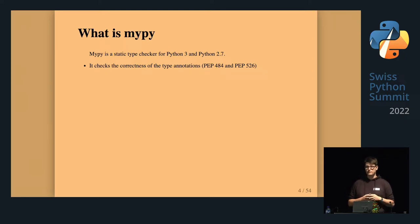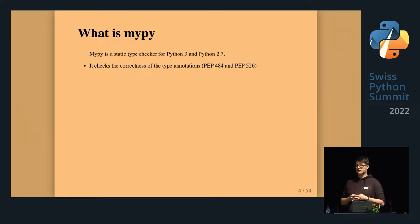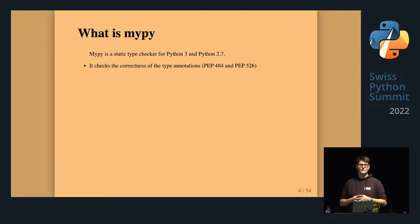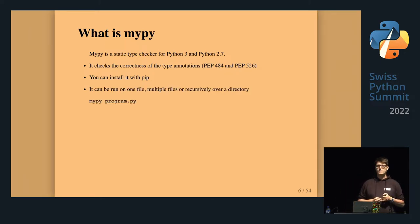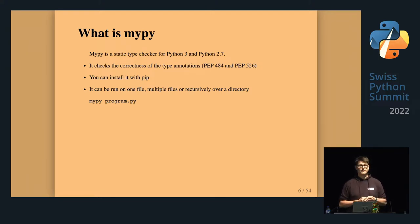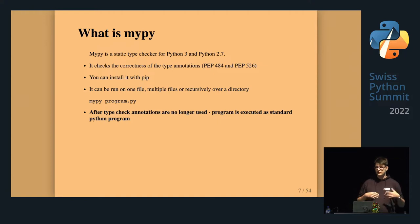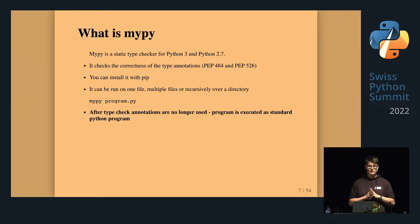Mypy is a Python program that allows checking for correctness of type annotations — the standard type annotations from Python itself. You can install it with pip, run it over one Python file, recursively over a directory, or a module. Importantly, you don't have to type the whole project from the beginning; you can go file by file. After type checking is done, the annotations do not add any overhead to your program — they're simply not present at runtime.